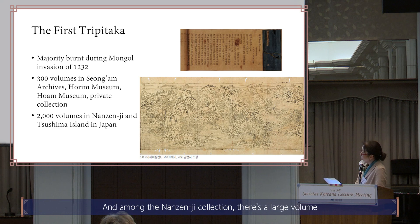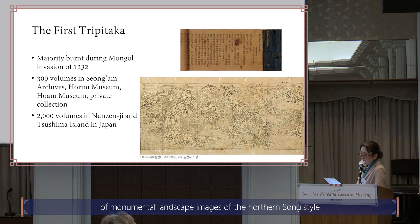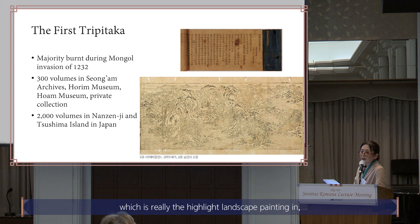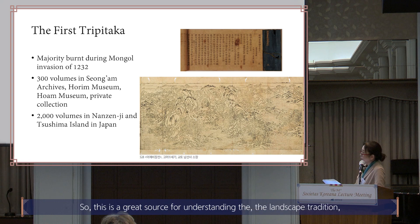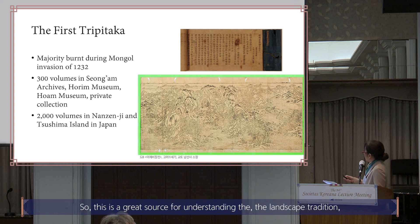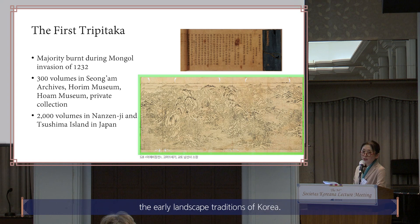Among the Nanzenji collection, there is a large volume of monumental landscape images in the Northern Sung style, which represents the high point of landscape painting in China. These are yet to be studied in detail, and this is a great source for understanding the early landscape traditions of Korea.